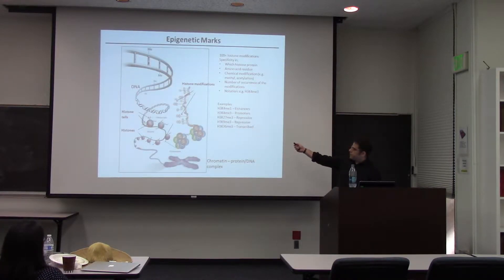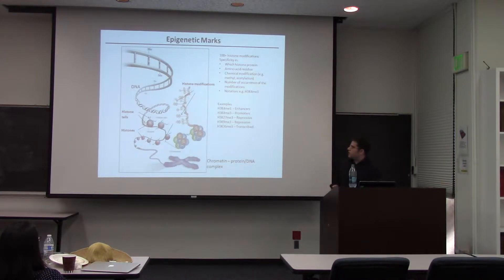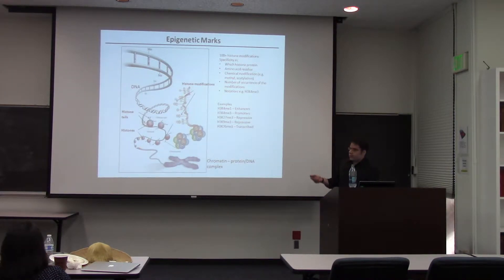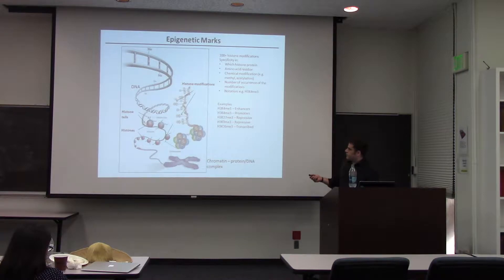Just to recap from my previous talk: we have lots of different epigenetic marks. In particular, a lot of my work focuses on histone modifications — chemicals added to the histone proteins that the DNA is wrapped around. You get specificity from which histone protein is modified, the specific amino acid residue, the type of chemical (methyl or acetylation), and the number of occurrences. These histone modifications have specific notations encoding the histone protein, residue, modification type, and copy number.